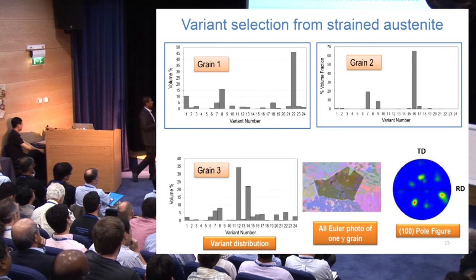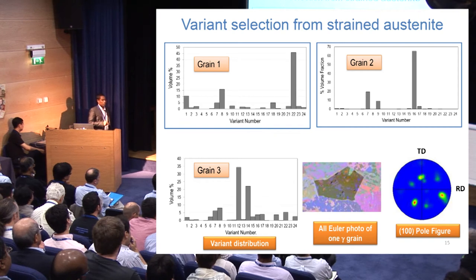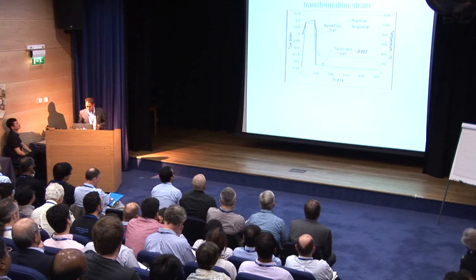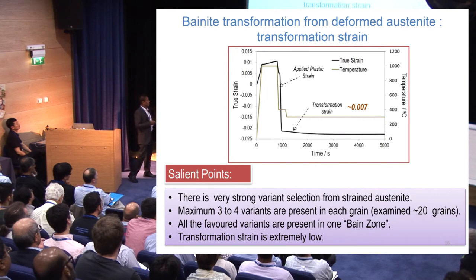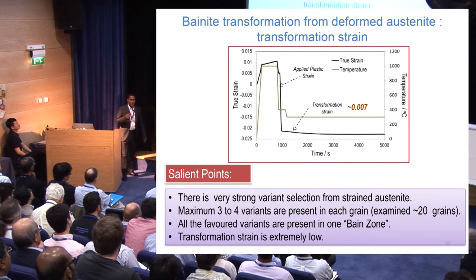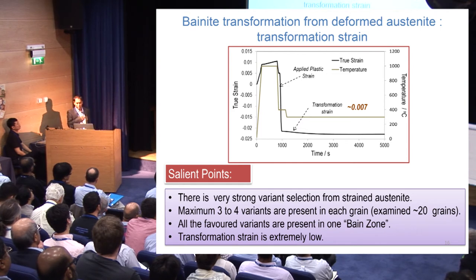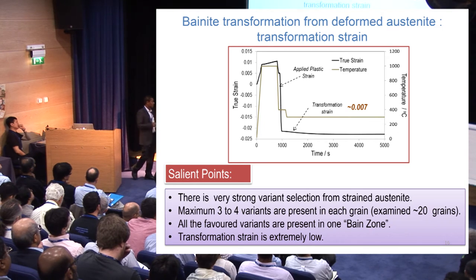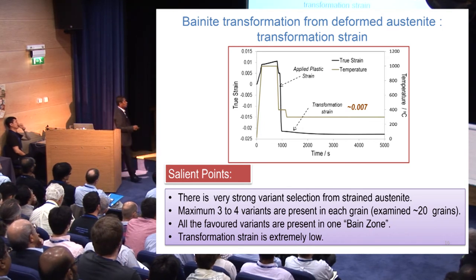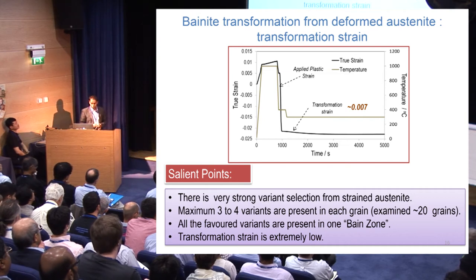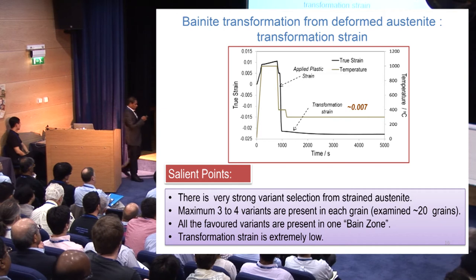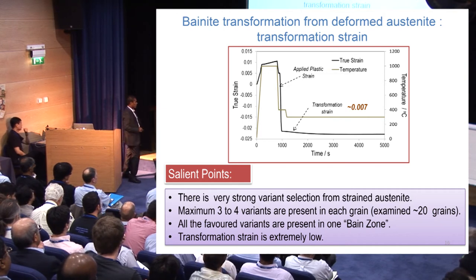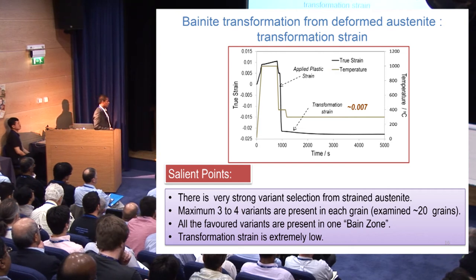When transformation occurs from strained austenite, the variant selection is quite strong — only 3 or 4 variants form in each grain, as clearly seen in the pole figure. However, the measured transformation strain is very low, at 0.007, compared to 0.015 and 0.02 under compressive and tensile stresses respectively. The key observations are: very strong variant selection from strained austenite, maximum 3 or 4 variants per grain, all favored variants are present in one Bain zone, and the transformation strain is extremely low.